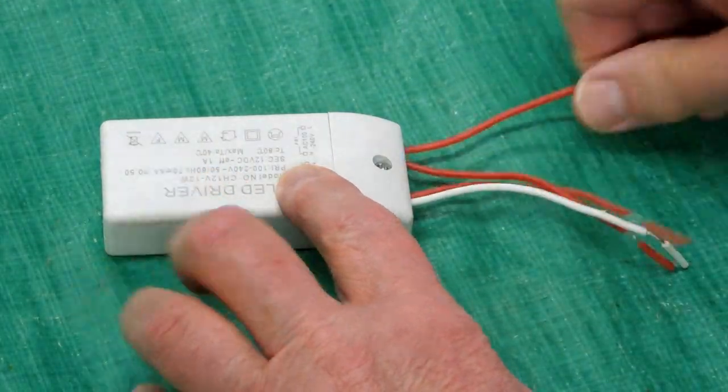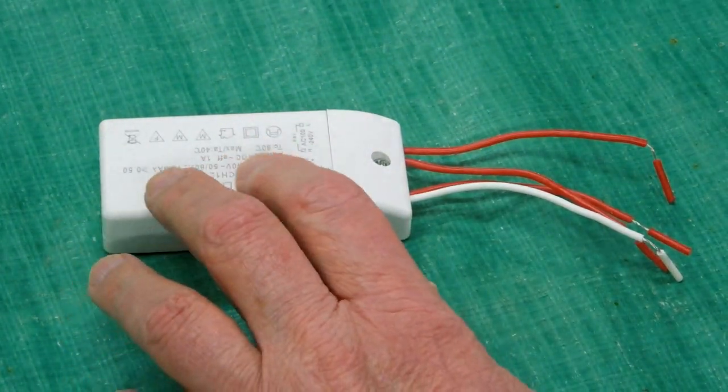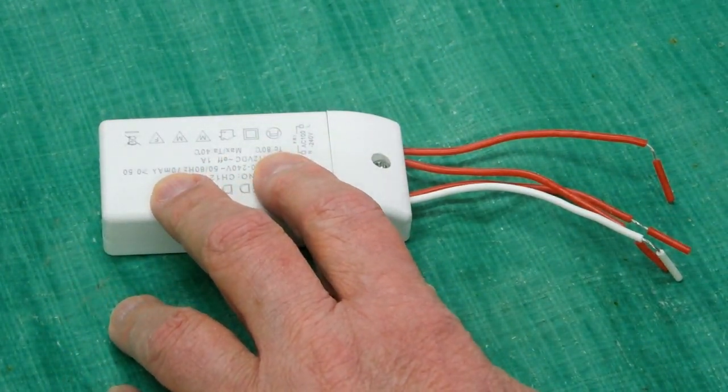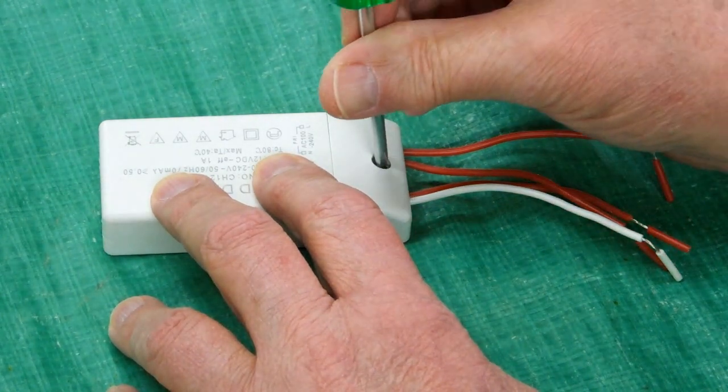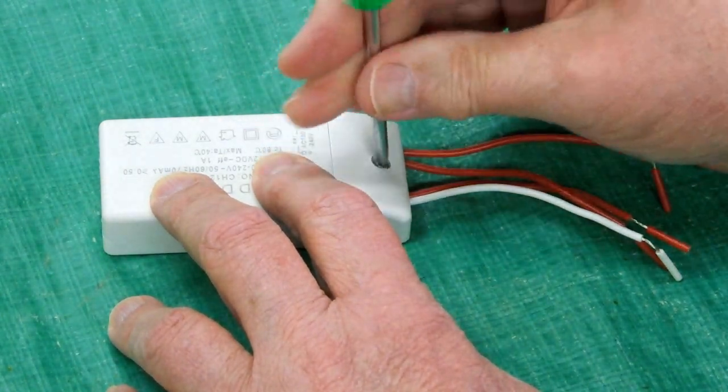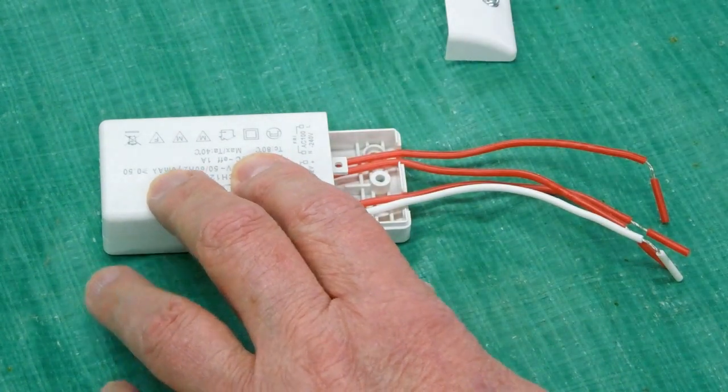The wires on this transformer or LED driver are a little bit short. If you don't want splices outside of this box, this is pretty easy to fix. Take this cover off. You can pry this piece off.